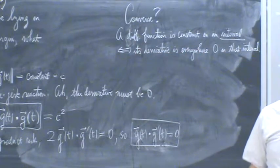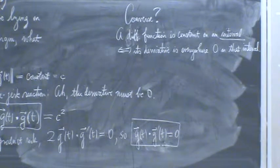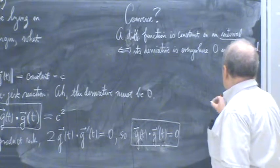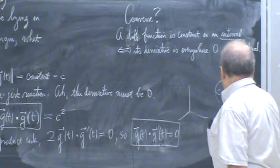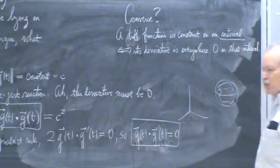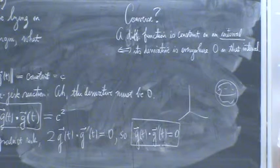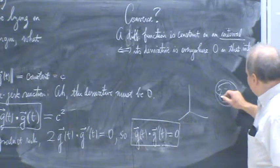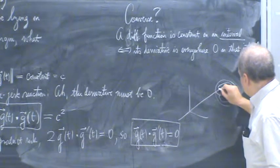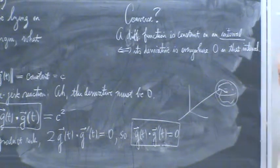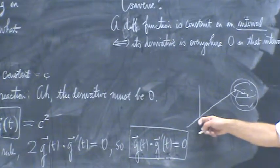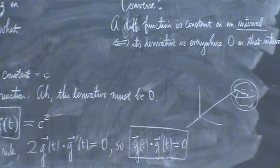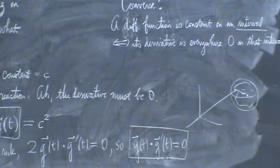Why must it be a sphere centered at the origin? If you were flying around on a sphere centered elsewhere, your velocity would be perpendicular to the radius from that center — not from an arbitrary origin. So you just set the origin at the center of the sphere for the statement to hold.